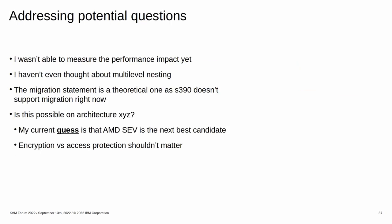As we only have limited time for questions and since I'm not in Dublin, I've tried to come up with potential questions and answers. I haven't measured the performance impact yet — the state of the code simply doesn't allow it right now. I have neither tested nor thought about more nesting levels; the performance generally doesn't get better with each new nesting level, so I don't see a use case. My statement about migration being complicated is a theoretical one, as S390 doesn't support migration for secure VMs right now. And my current guess is that AMD SEV is the next best candidate for nesting, since the API isn't too big — though I only had time to glance over x86, so take it with a grain of salt.